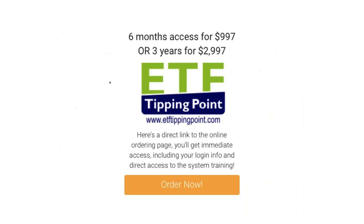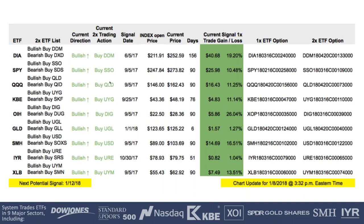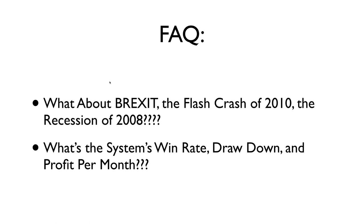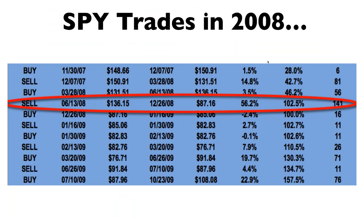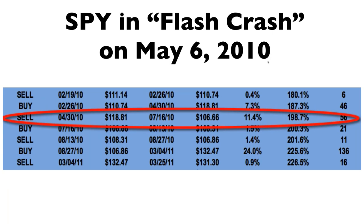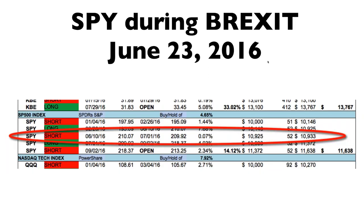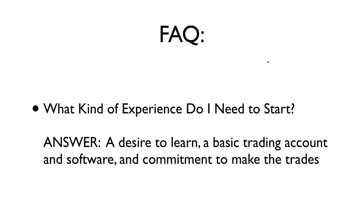Let's answer a few remaining questions. What about Brexit, the flash crash of 2010, or the 2008 recession? In 2008 on the SPY, we made 56% from June 2008 to December 2008. The flash crash — May 6, 2010 — we were already bearish that day and up 11% on that trade. Brexit, which happened June 23, 2016, we were also short at that time. So in every single major market correction, the system has performed well.